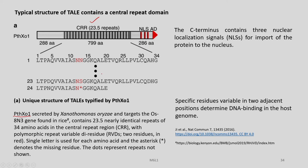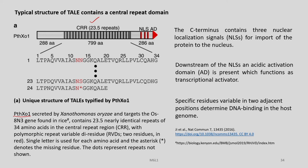In the C-terminus there are three nuclear localization signals (NLS), and with these the protein is imported to the nucleus of the host cell. Downstream of these nuclear localization signals there is an acidic activation domain (AAD) which functions as a transcriptional activator. The typical structure to remember: there is a central repeat region (CRR), then there are RVDs in each of these repeats which are around 34 amino acids in length, and then there is a nuclear localization signal in the C-terminal along with an acidic activation domain.